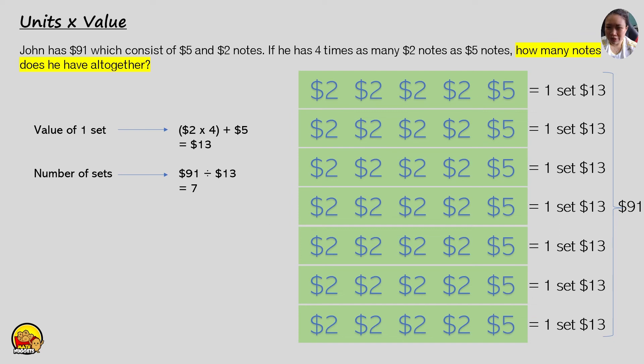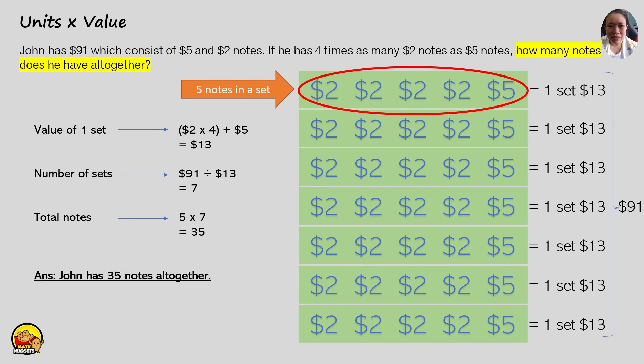Now so let's go back to one set. Five notes in one set. Therefore, the total number of notes will be 5 notes in one set times 7 sets. That will be a total of 35 notes. So the answer is John has 35 notes all together.